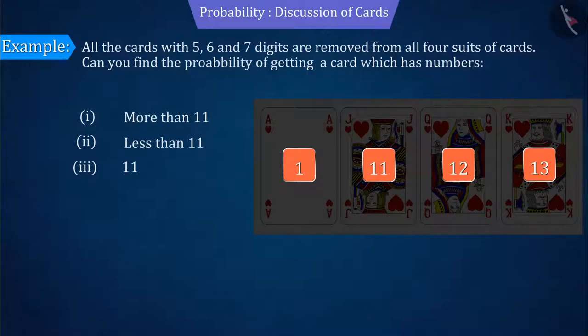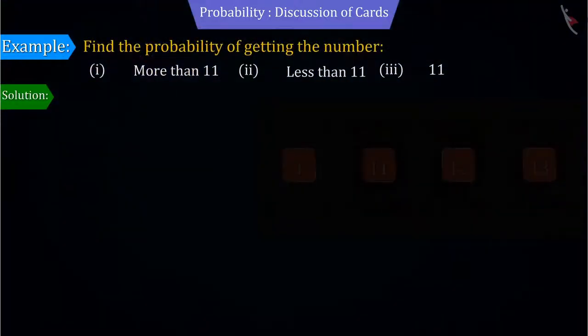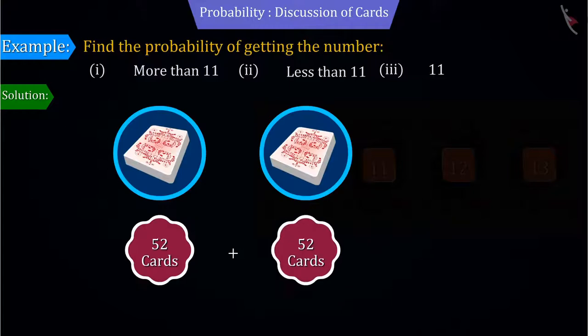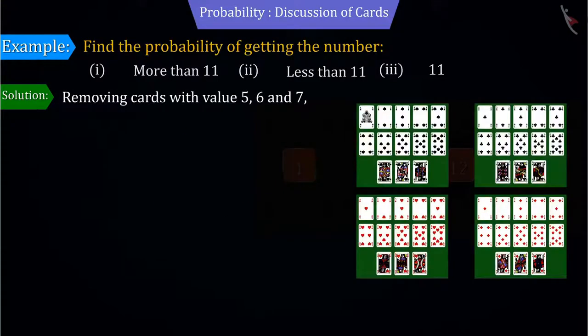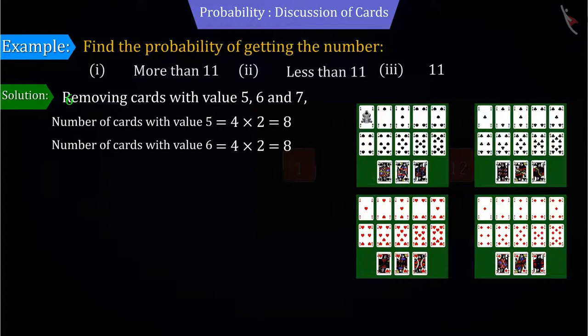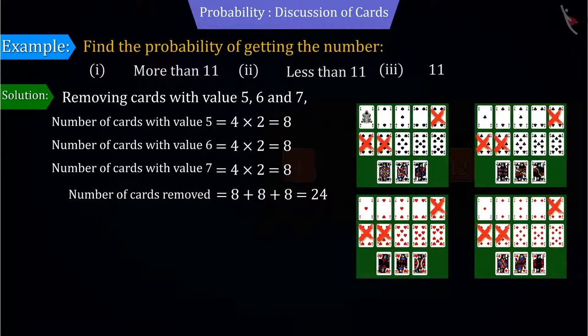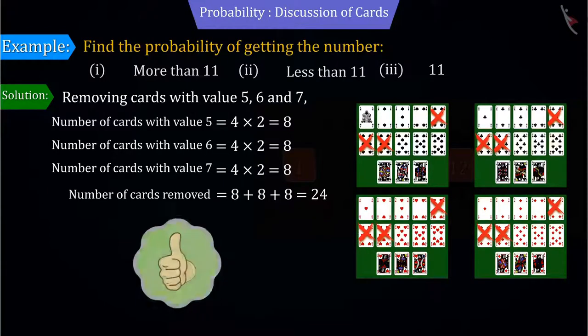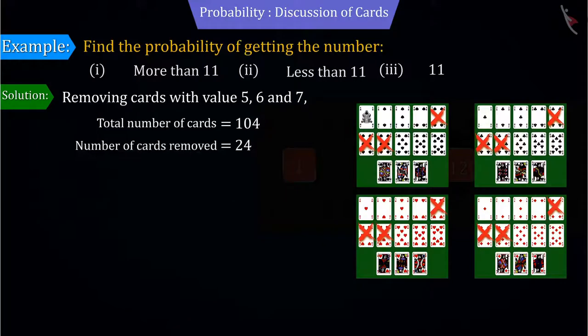Let us discuss this. According to the information given, we have two decks of cards totaling 104 cards. If all the cards having 5, 6 or 7 are removed from these cards, then what will be the total number of remaining cards? Absolutely right! The number of remaining cards will be 80.